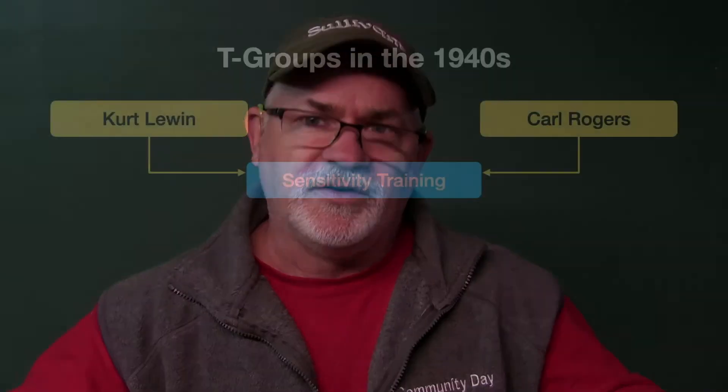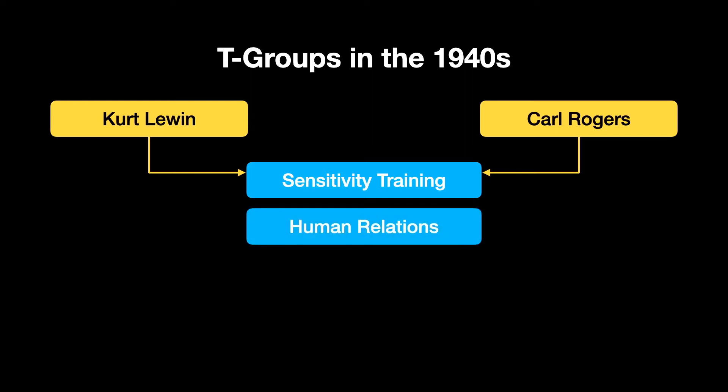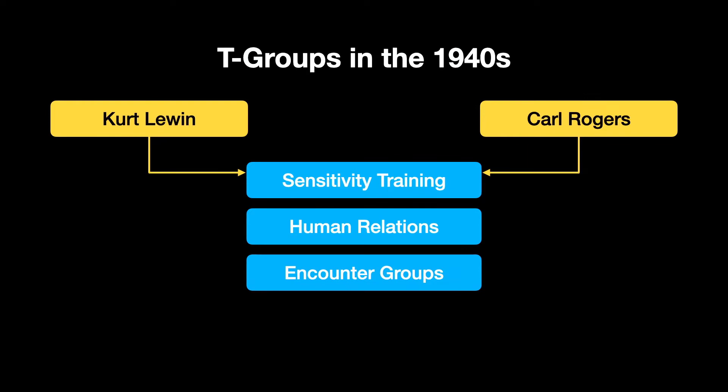Moving on in the history, we have human relations and encounter groups — growing from the forties on, with encounter groups in the sixties, seventies, and eighties. Different kinds of groups started getting together, manifesting in different ways.